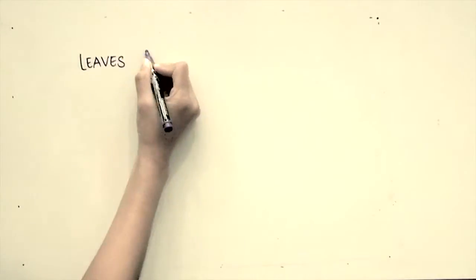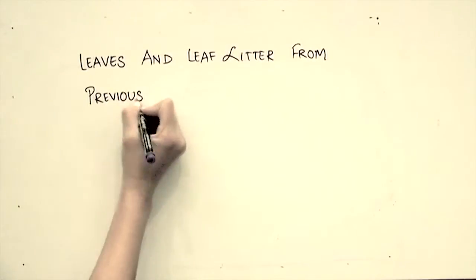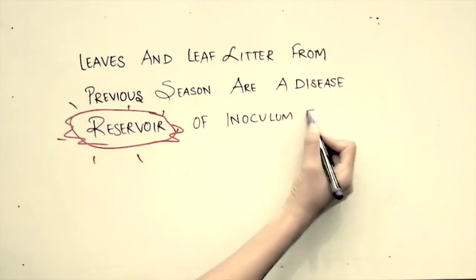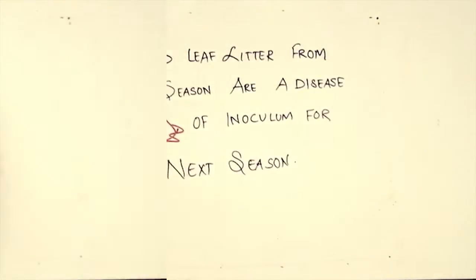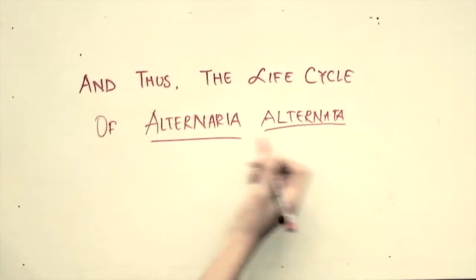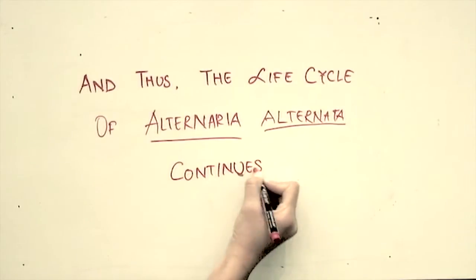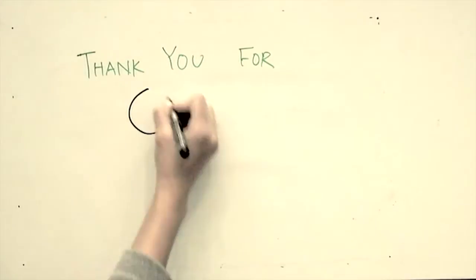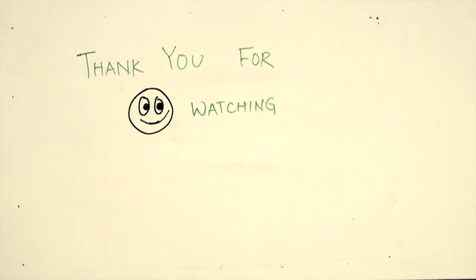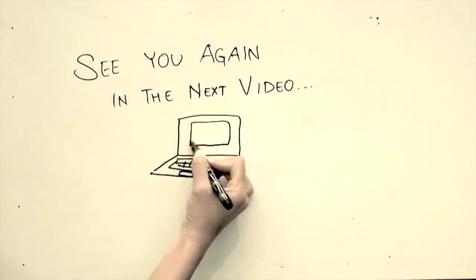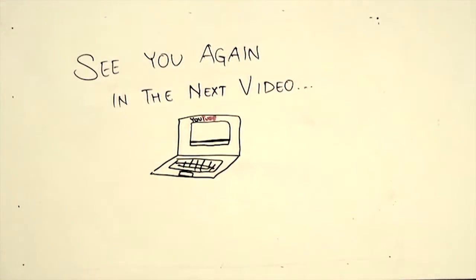So kids, you stay alert and be careful about any such conidia. Leaf like me and leaf litter from previous seasons are reservoirs of the disease for the next season or your generation. And thus they continued their life cycle — the life cycle of Alternaria alternata. So that's it for today. Thank you for watching, and we will see you in the next video of another interesting life cycle.